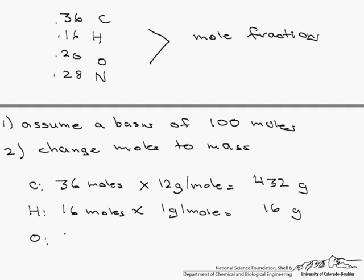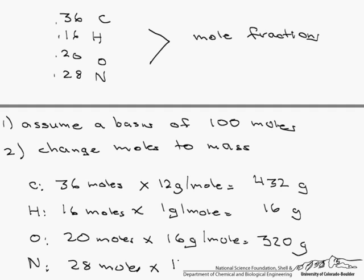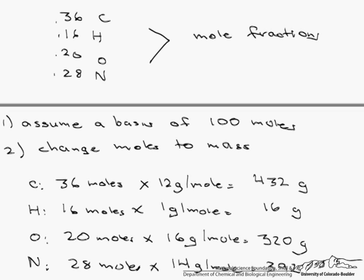For oxygen, 20 moles times 16 grams per mole, which gives us 320 grams. And finally nitrogen, which is 28 moles, we multiply that by 14 grams per mole, and we get 392 grams.